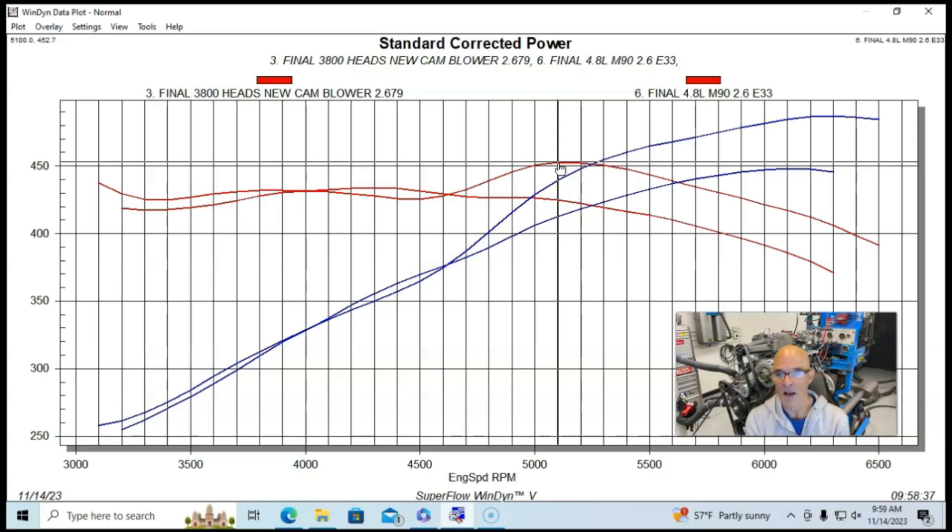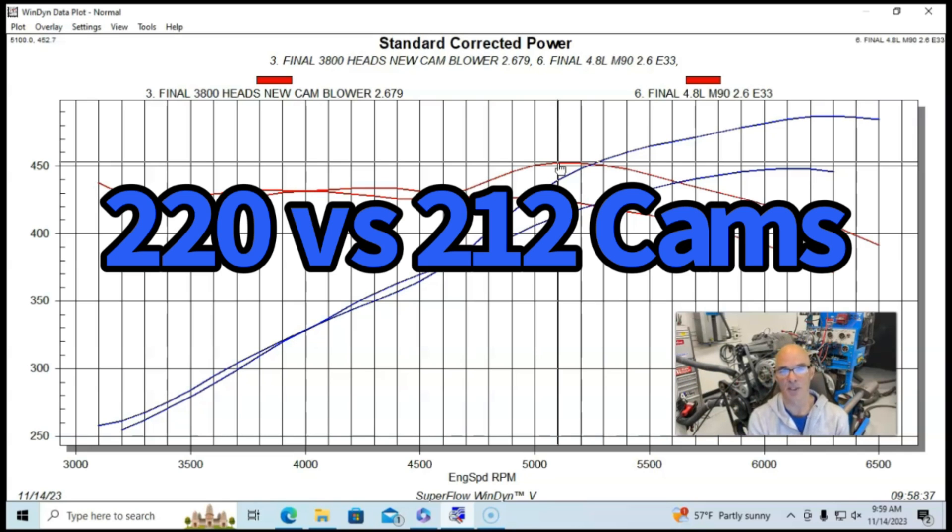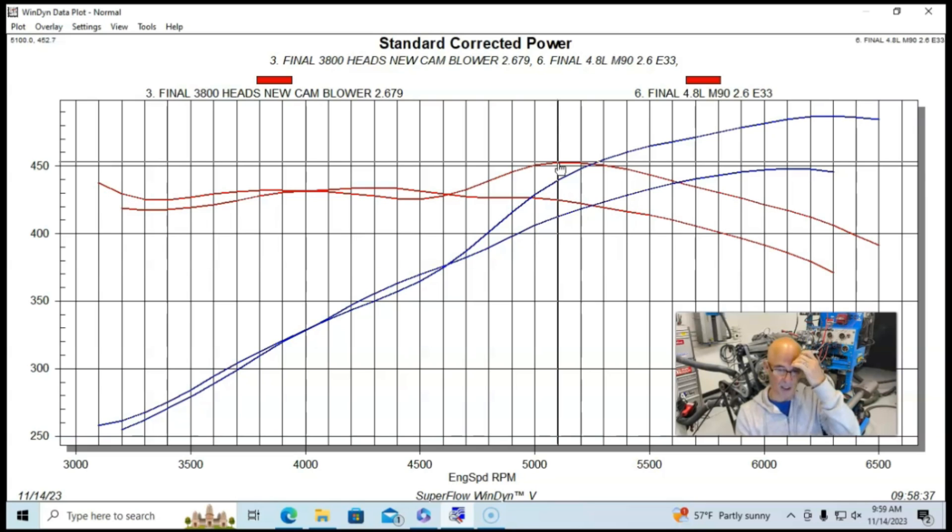I also think that the milder camshaft in the 4.8 liter, the Truck Norris NSR cam—212 degrees of duration versus 220 or more degrees of duration on the 3.8 liter.